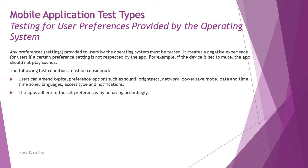The following test conditions must be considered. Users can amend typical preference options such as sound, brightness, network, power save mode, date and time, time zone, languages, access type, and notifications. This covers everything when it comes to testing preferences from the settings, and it applies to any particular app.